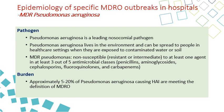Pseudomonas aeruginosa lives in the environment and can be seen on water, soil, surfaces, and objects. MDR Pseudomonas is defined as an organism that is not susceptible — meaning resistant or intermediate — to one agent in three to five antimicrobial classes, including penicillins, aminoglycosides, cephalosporins, fluoroquinolones, and carbapenems. About five to twenty percent of Pseudomonas meet the definition of MDRO and cause infection.